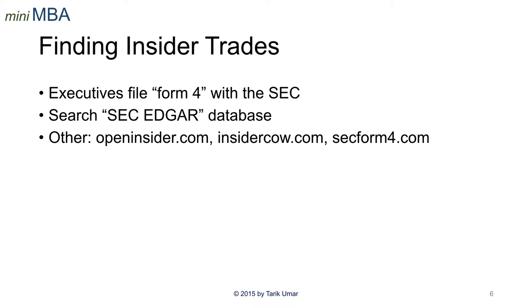You can find this Form 4 at a database called the SEC Edgar database. Just Google SEC Edgar and you can search by ticker symbol or company name. Just remember that when you do a search, make sure you select the radio button that says 'include ownership filings,' because if you don't, no Form 4 will show up. Perhaps an easier way is to go to third-party sites like openinsider.com, insidercow.com, or secform4.com. These third-party sites feed from the SEC Edgar database, but do a little bit of processing to help weed out some uninformative reports.